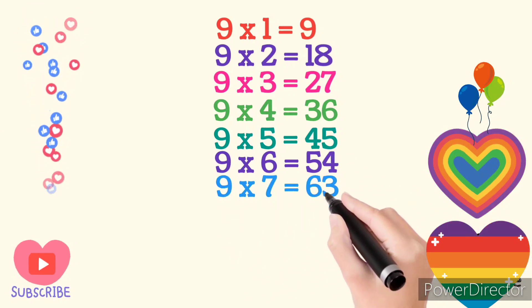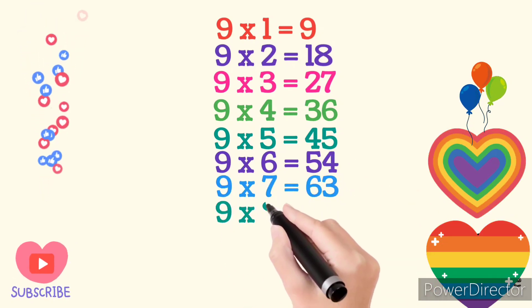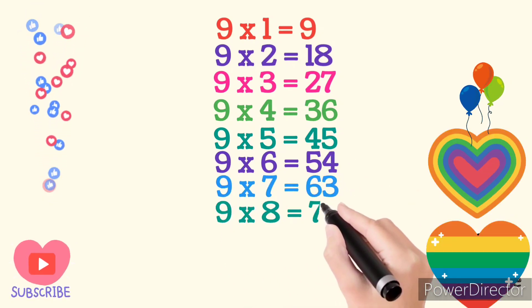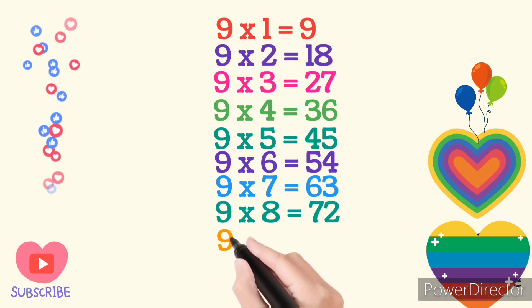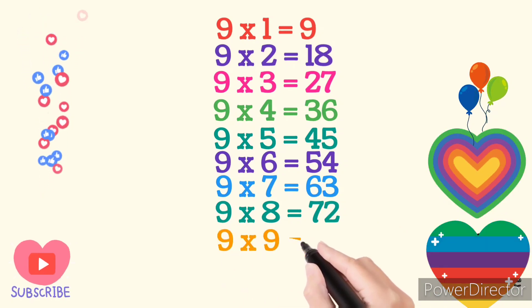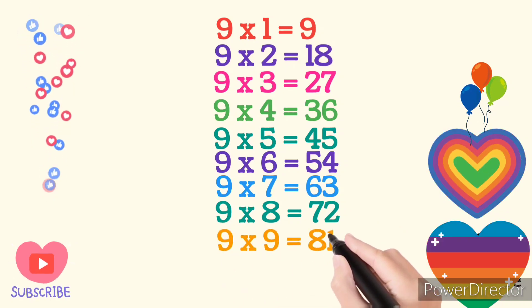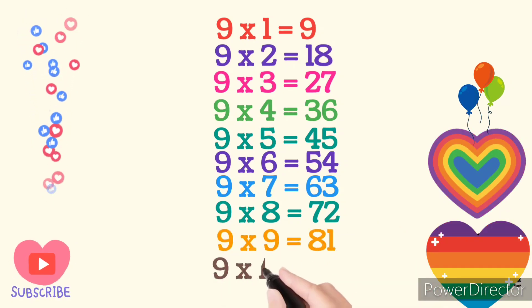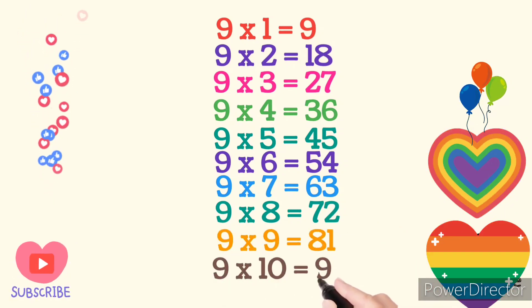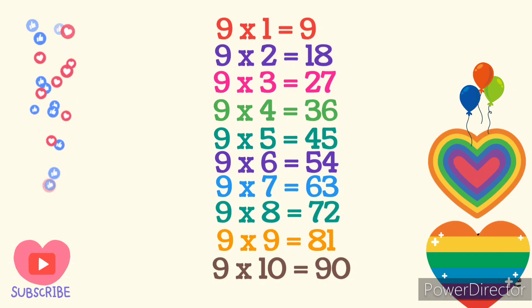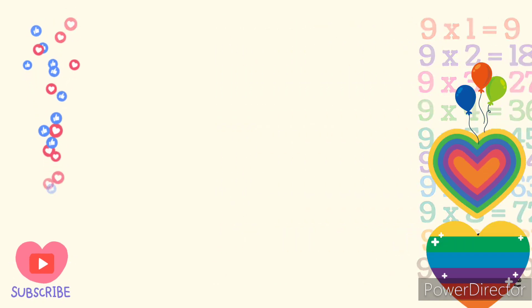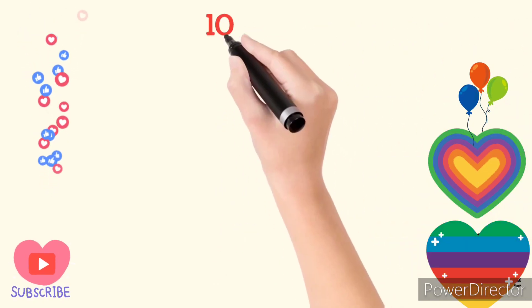9 times 7 are 63. 9 times 8 are 72. 9 times 9 are 81. 9 times 10 are 90. Table of 10.